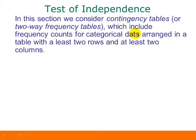In this section, we consider contingency tables, or two-way frequency tables, that we talked about back in Chapter 4 at the beginning of the semester. These include frequency counts for categorical data arranged in a table with at least two rows and at least two columns.